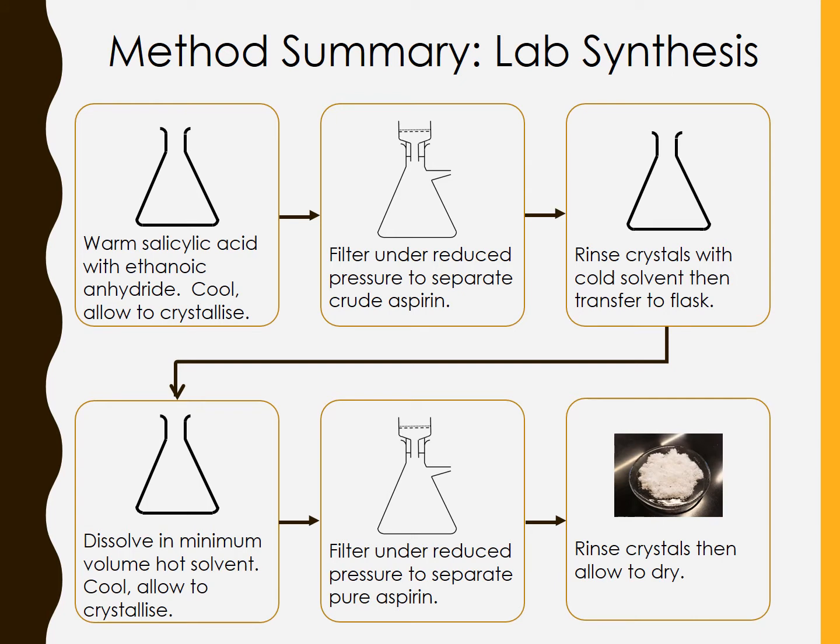Let's have a look at how aspirin can be made in the lab. The first step is to warm the salicylic acid with a second reagent called ethanoic anhydride. That reaction mixture is then allowed to cool and crystallize to make crystals of aspirin, which can be separated from the rest of the reaction mixture by filtration under reduced pressure. The crude aspirin is then rinsed with cold solvent and the crystals are transferred to a second flask.